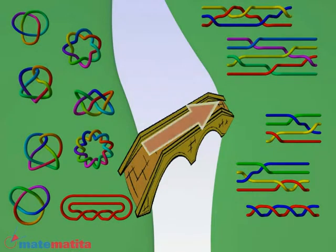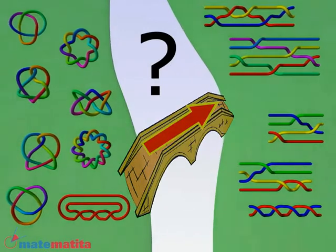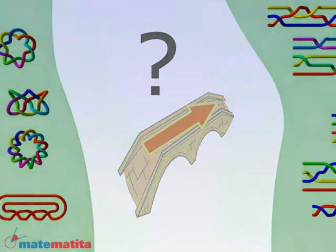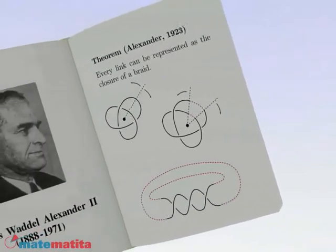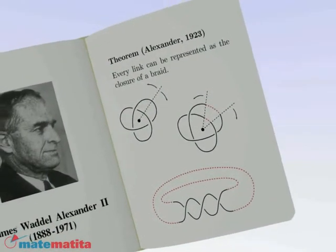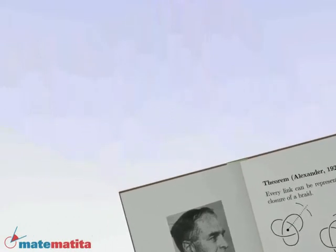And vice versa, can we cross the bridge in the other direction? A theorem of Alexander ensures that it is possible and gives an algorithm to do it. We describe it even if more efficient ones are known.